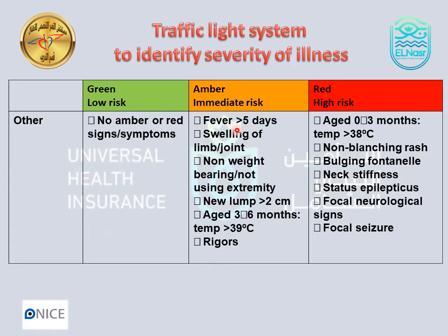Other characteristics: in the yellow area, fever more than 5 days, swelling of a joint, unable to walk or no weight bearing, not due to extremities. New lymph node more than 4 cm. In the red area: age below 3 months, temperature more than 38°C, non-blanching rash, reduced consciousness, neck stiffness — all presenting with fever.